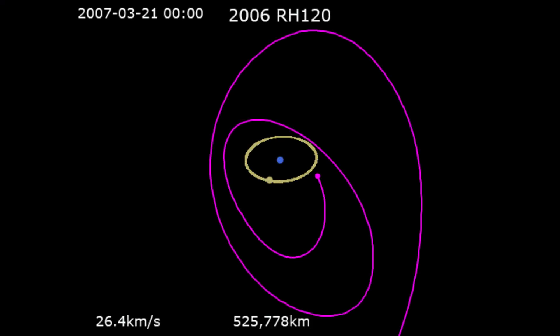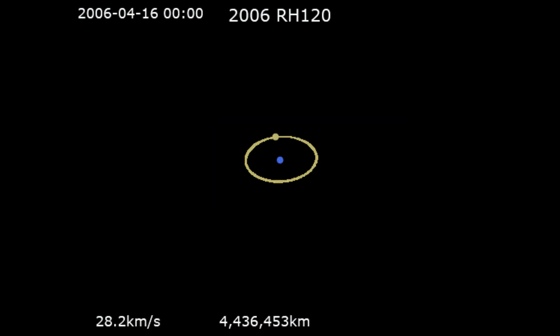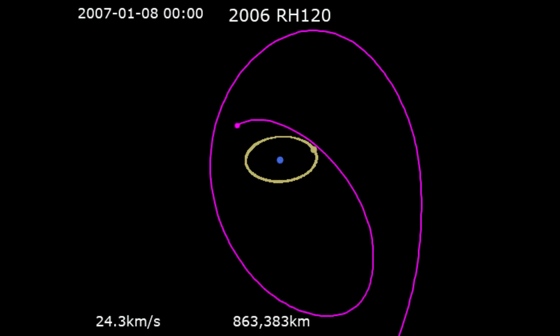In 2006, a small object was detected orbiting Earth. It was named 2006 RH120 and was one of the first examples of what is now called a mini-moon. It didn't last long, only a few months, before escaping Earth's gravitational pull and returning to orbit around the sun.